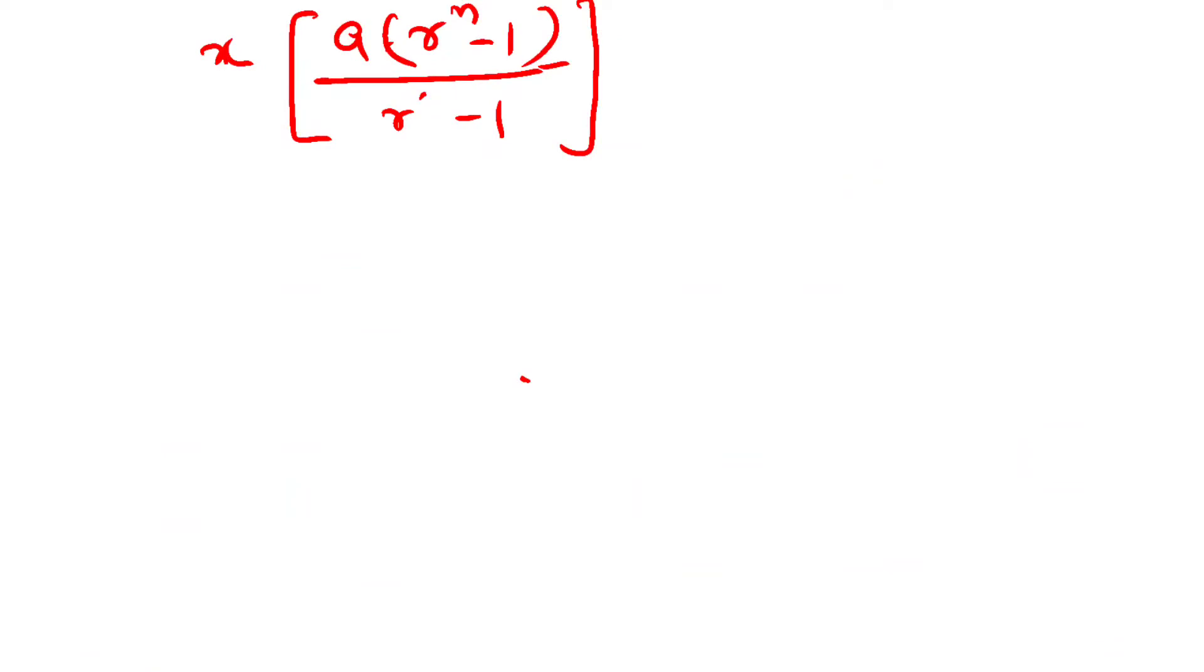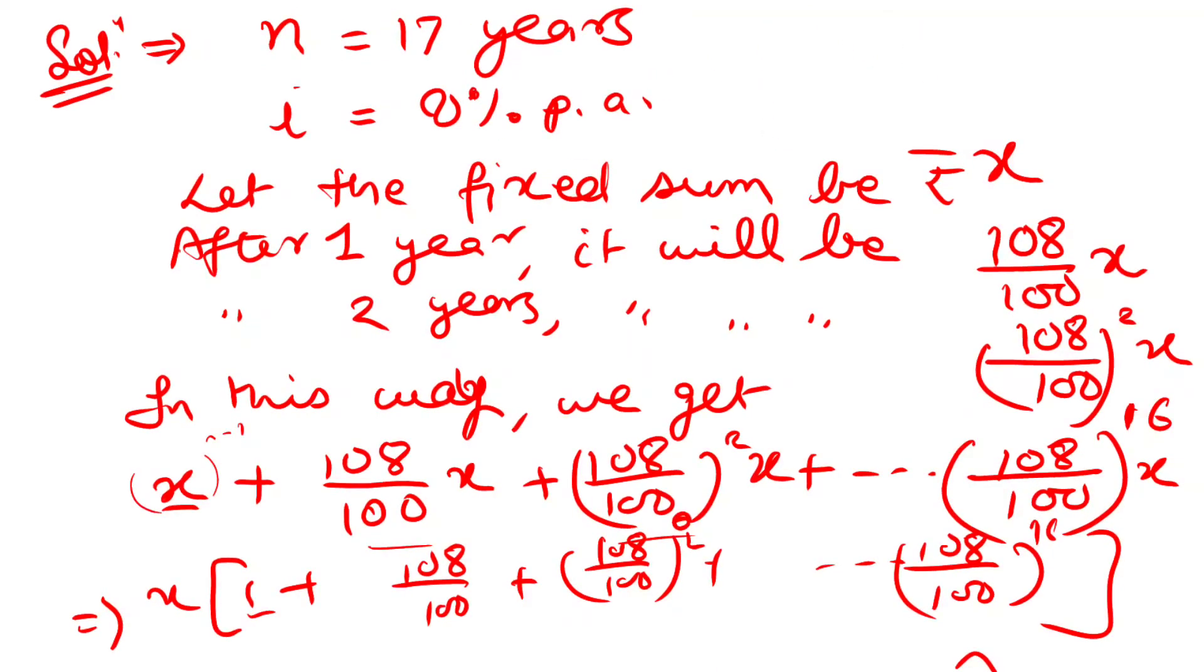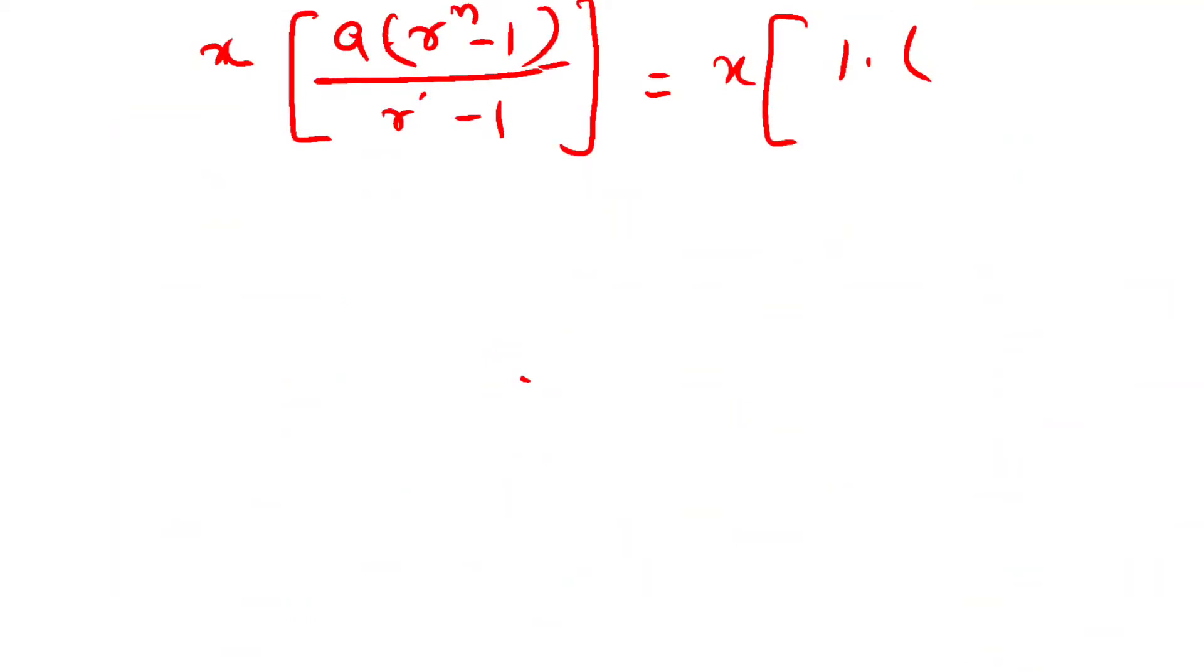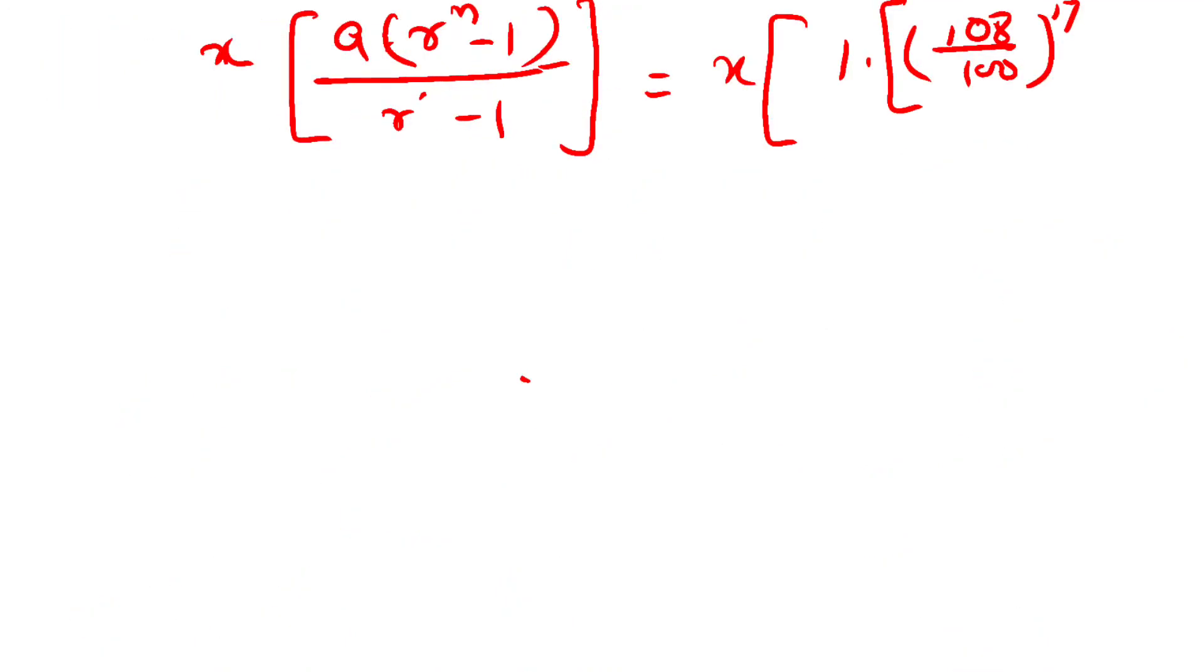The first term is 1, and r is 108 upon 100. The power n is 17, so n minus 1 is 16. Therefore we get: x times [108 upon 100 to the power 17 minus 1] upon [108 upon 100 minus 1].